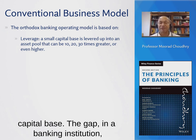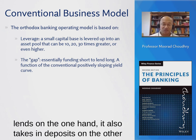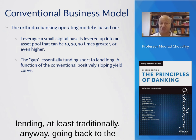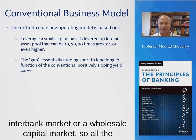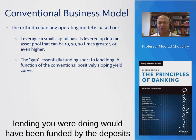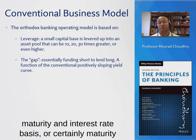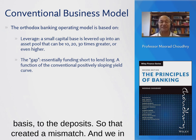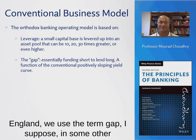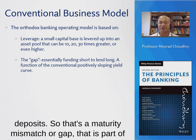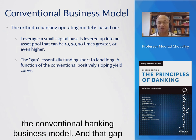A banking institution lends on one hand and takes in deposits on the other. Those deposits are used to fund the lending — at least traditionally. Going back to the 16th century, there was no interbank or wholesale capital market, so all lending was funded by deposits. However, the lending was on a different maturity basis to the deposits, creating what in England we call a 'gap' — or in some countries a 'mismatch' — between the contractual maturity of the lending and that of the deposits.